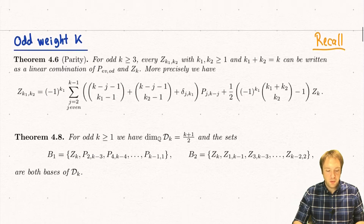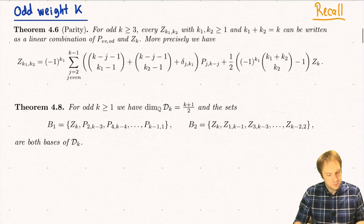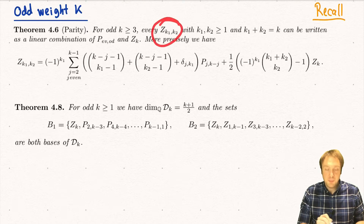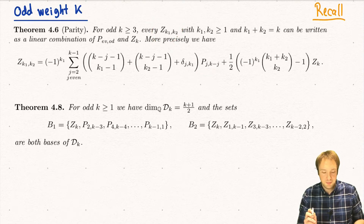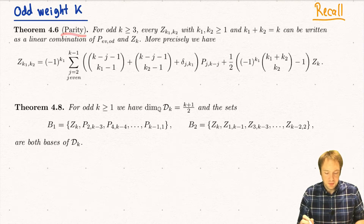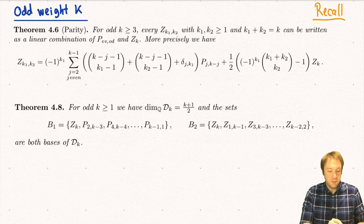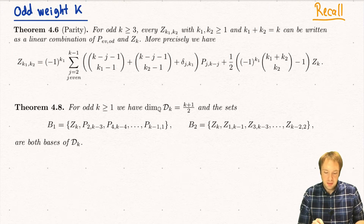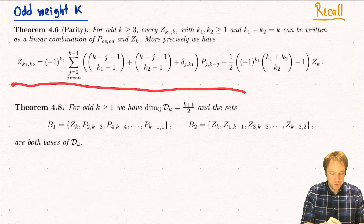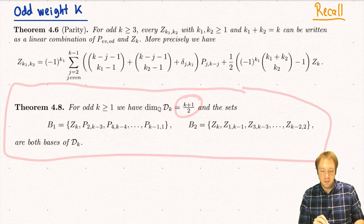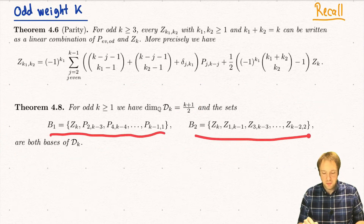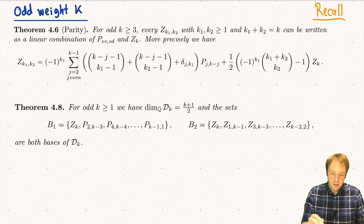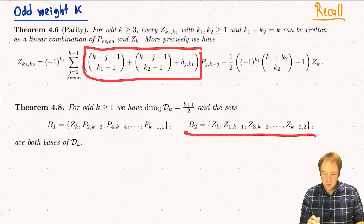For example, in odd weight we proved the parity result stating that if k is odd then all of these double zetas can be written in terms of these p's and these single zetas. So if we apply the zeta realization this means that every double zeta value in odd weight can be written as a polynomial in Riemann zeta values. We also saw that the dimension in odd weight is given by (k+1)/2, and we can write down two explicit bases for this space — one given by the single zetas and the p's, and we were also able to invert this equation to get another basis.